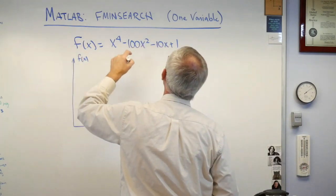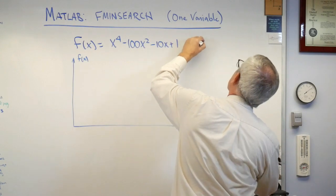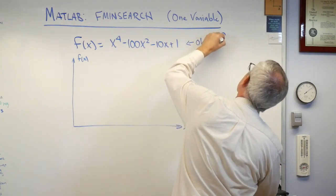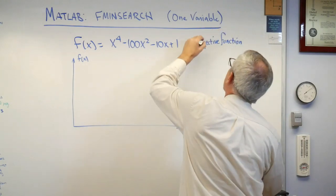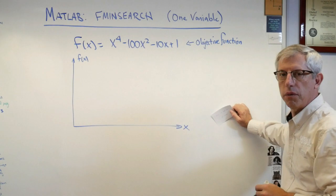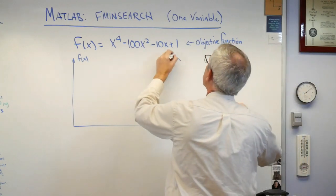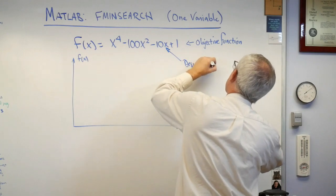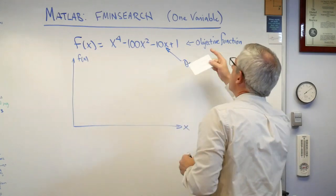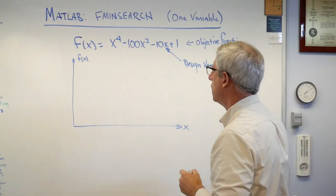So this is the objective function. There, I'll get out of your way. That's the objective function. And x, that's the design variable. And again, in this problem, we've only got one design variable, so it's pretty simple.